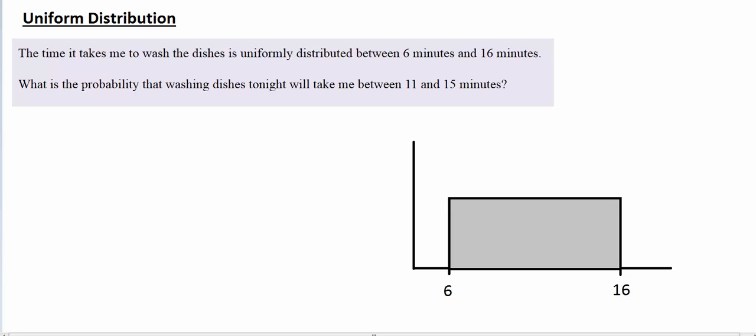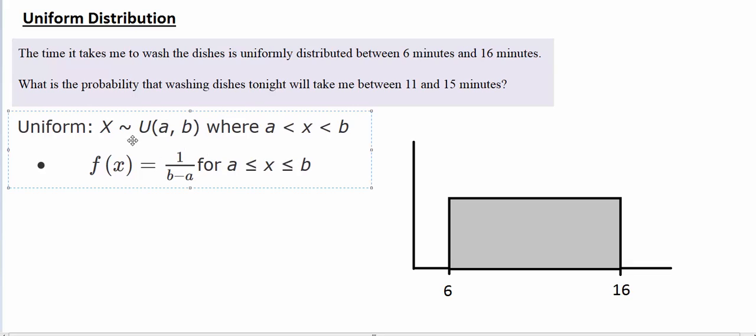We have a formula we can look at. This is a uniform distribution defined on a uniform interval from 6 to 16 in our case. So a would be 6, b would be 16, where a < x < b. And f(x) is defined as 1/(b - a).